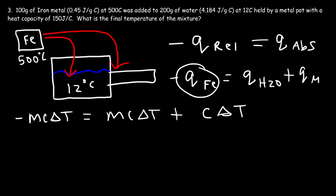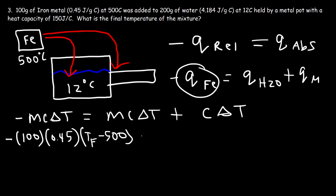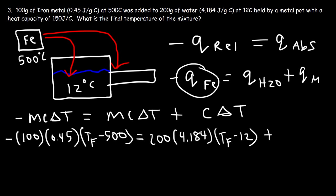The mass of iron metal is 100 grams, specific heat capacity is 0.45, and delta T is the final temperature minus 500. The mass of water is 200, specific heat capacity is 4.184, and delta T is the final temperature minus 12. The heat capacity of the metal pot is 150 joules per Celsius, times delta T, which is the final temperature minus 12. The metal pot and the water share the same initial temperature of 12 degrees Celsius.